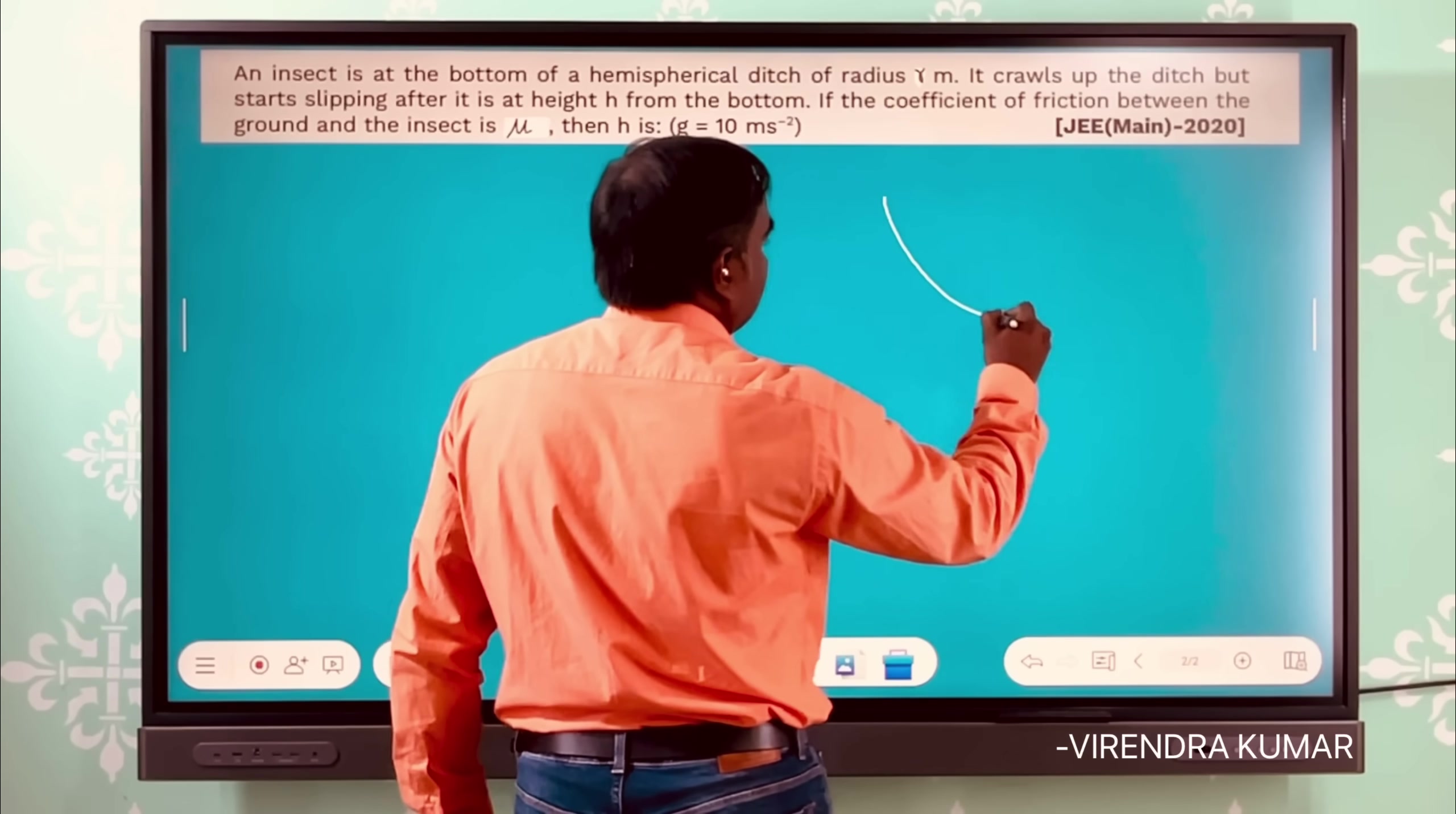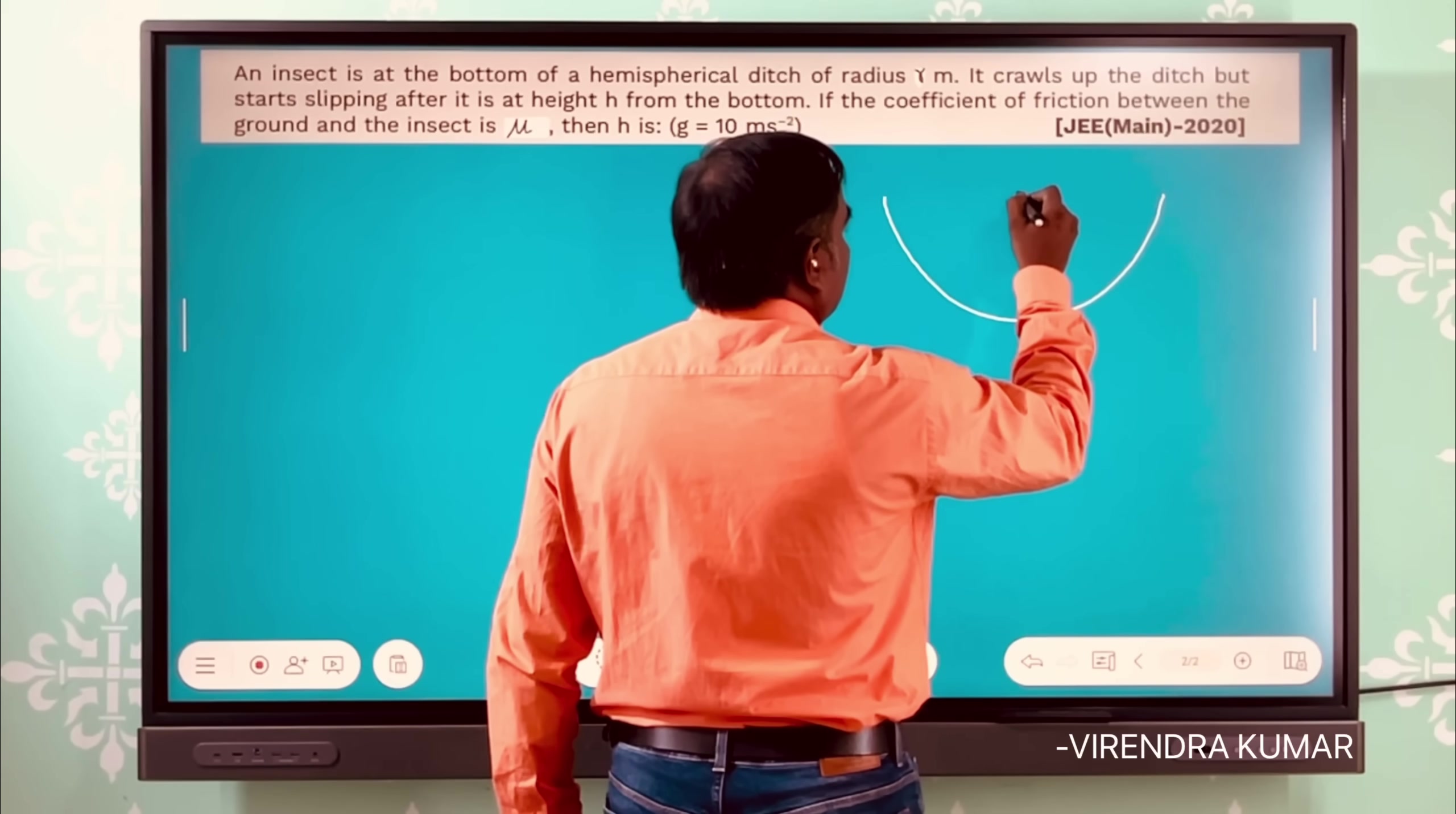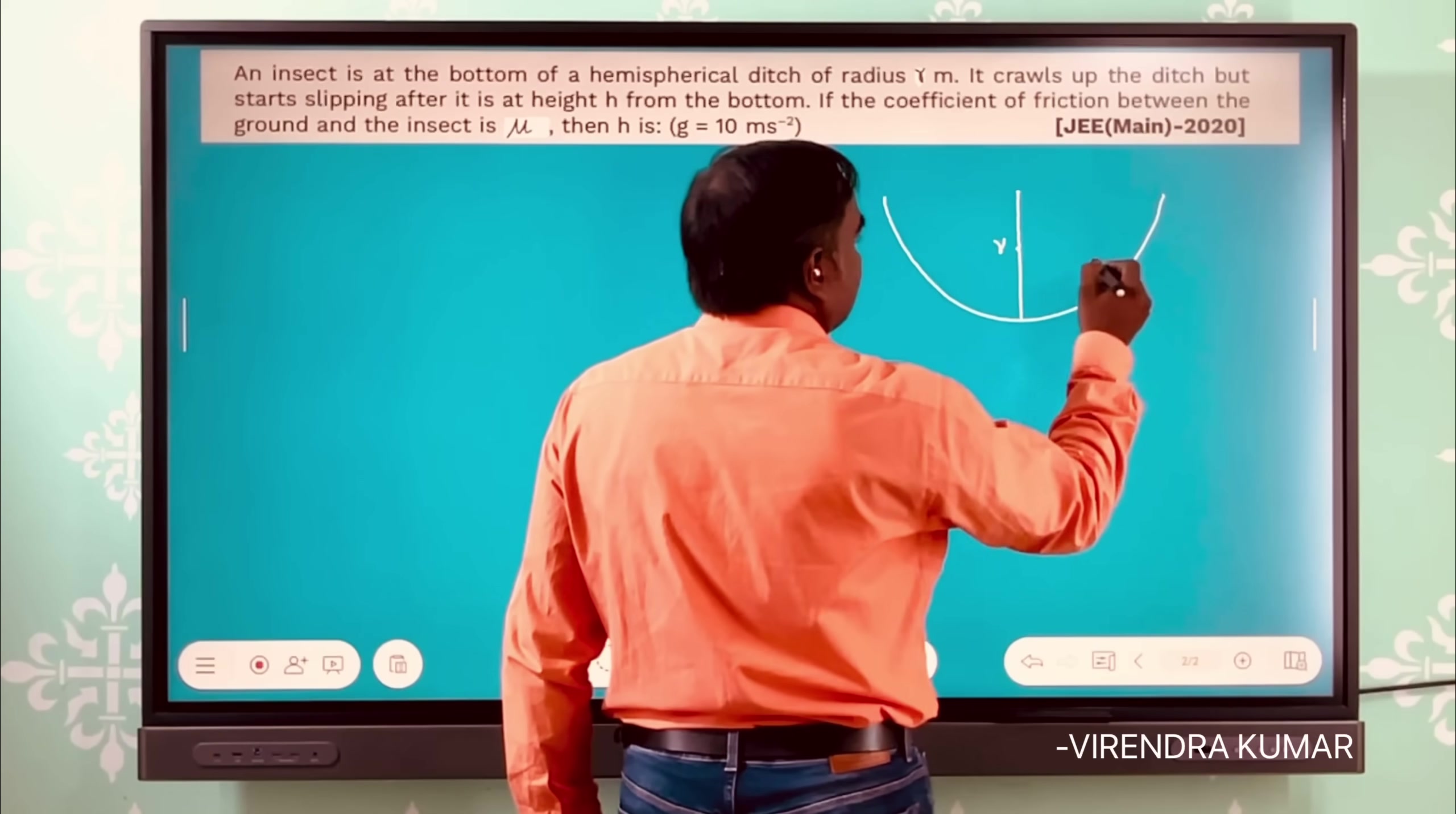...in a hemispherical ditch. So this is a ditch and it is hemisphere. Let us - this is the center of the hemisphere, and if we - what is this? This is the radius r, and an insect is...